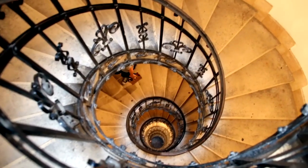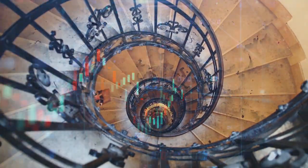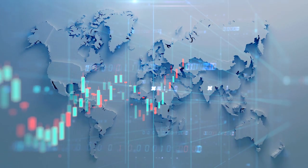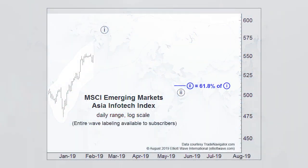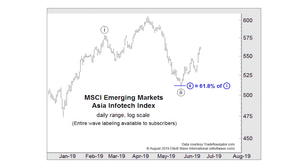What does a discussion of Fibonacci have to do with today's global stock market action? Here's an example from our August Global Market Perspective. You'll notice how the Asia Infotech Index began an upward turn right at the point that Wave Circle 2 reached 61.8% of Wave Circle 1. This is just one example of how stock markets the world over often conform to the golden ratio.